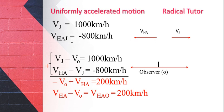This is the velocity of the hot air relative to the jet. It is positive for the jet, and negative for the hot air.